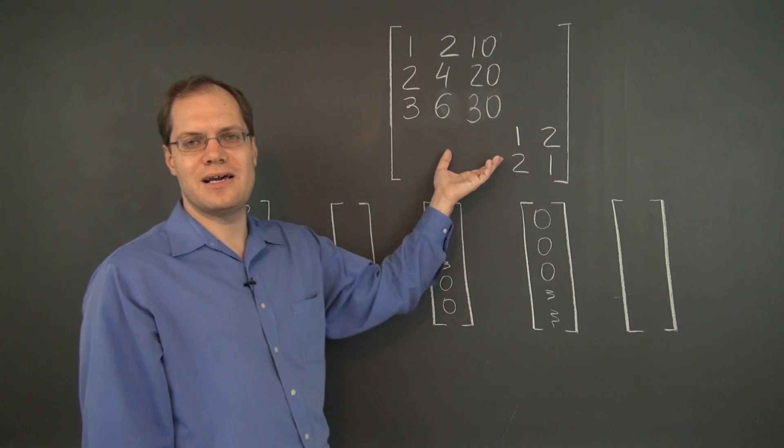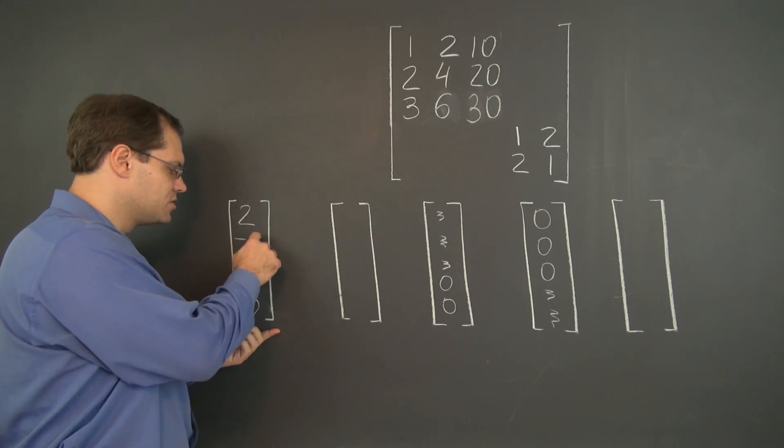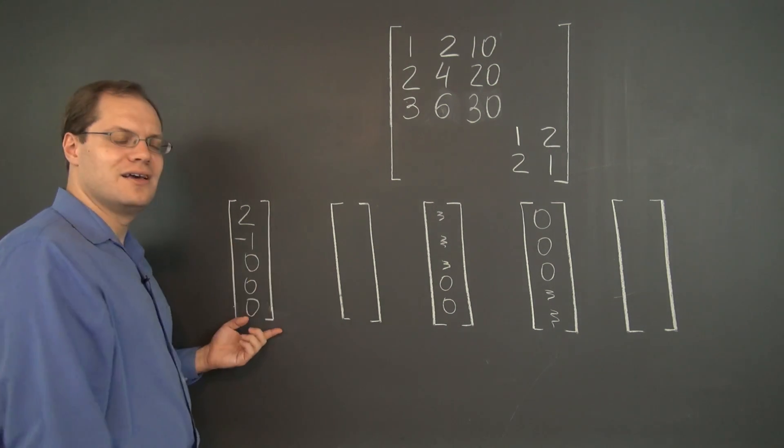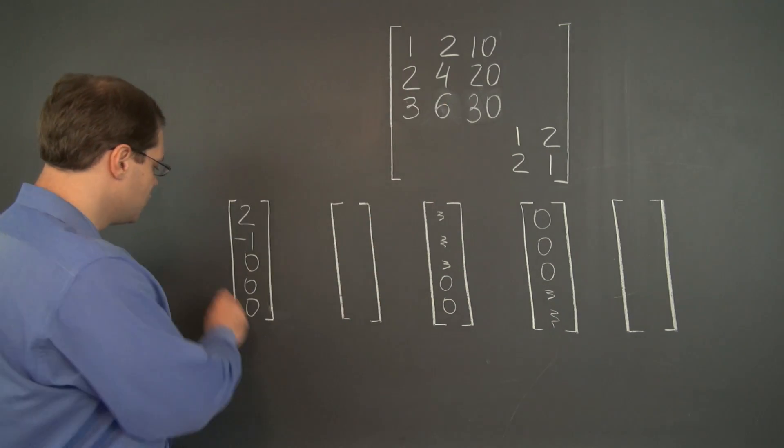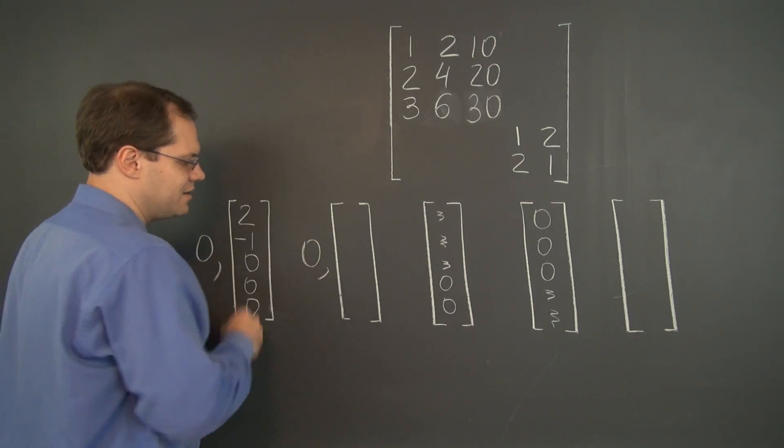Because if you multiply this matrix by this vector you would get zero zero zero zero zero. And that of course is also an eigenvector of this whole matrix corresponding to the eigenvalue zero. And there will be another one like it.